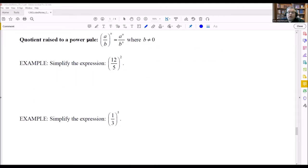When you have a quotient raised to a power, the rule we're going to use here is each thing on top and bottom both get raised to the power of n. So a in the numerator gets raised to the power of n and b in the denominator gets raised to the power of n. Of course, we can't divide by 0, so b can't be equal to 0.